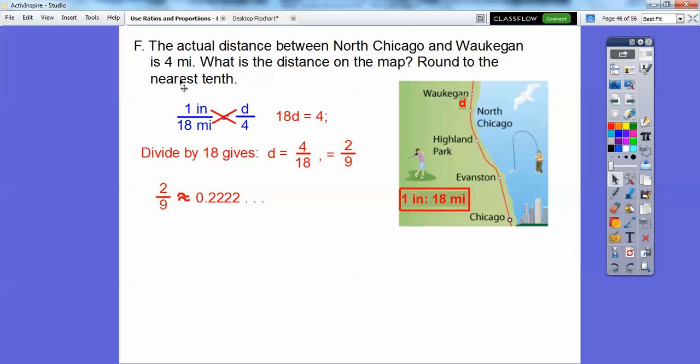And this one says, round to the nearest tenth. So the nearest tenth is the first decimal place right there. So this is going to be about 0.2 or two-tenths of an inch. The distance on the map from North Chicago to Waukegan is about two-tenths of an inch right there.